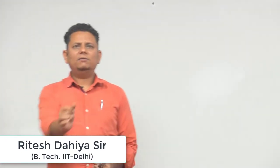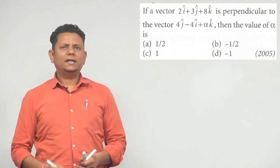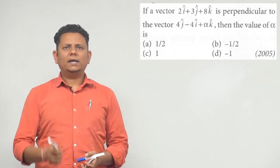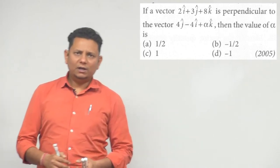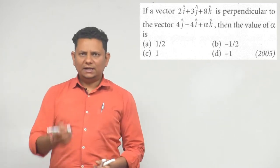Next question is from 2005 on vectors. It says if vector 2i cap plus 3j cap plus 8k cap is perpendicular to vector 4j cap minus 4i cap plus alpha k cap, then what will be the value of alpha? The choices given are 1/2, minus 1/2, 1, or minus 1. So let's